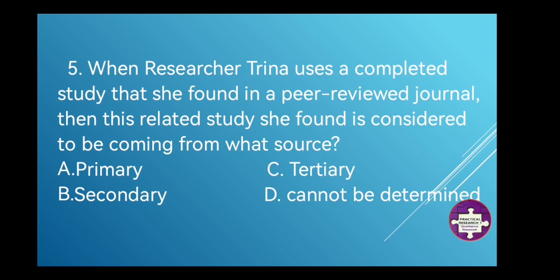For number 5, when researcher Trina uses a completed study that she found in a peer-reviewed journal, this related study is considered to be coming from what source? A. Primary, B. Secondary, C. Tertiary, or D. Cannot be determined. The correct answer is letter B. Secondary sources.